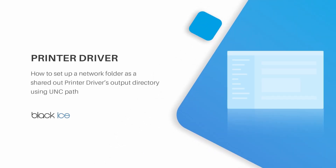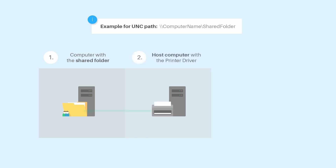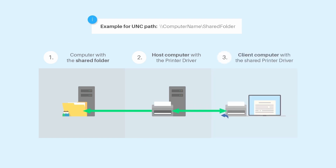How to set up a network folder as a shared-out printer driver's output directory using UNC-Path. The Black Ice printer drivers can use UNC-Paths for output folders on the network for shared printers. Users can access their printed documents from the client computer through the network. In this video, we will set up a shared folder on a server computer where the printer driver will generate the printed documents. Then we will configure the printer driver's output directory to the shared network folder on a different system, and share out the configured printer driver to a client computer. The shared folder will be accessible by the host computer and by the client computer.